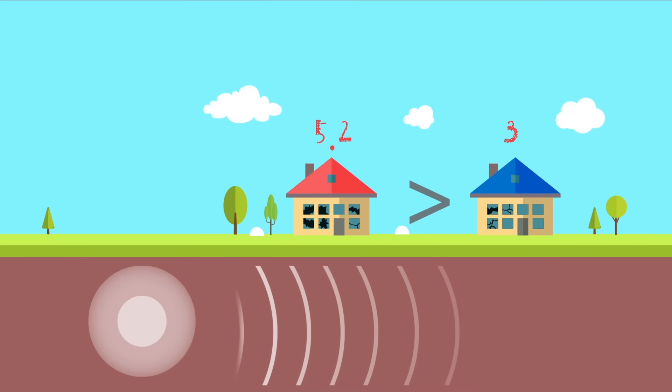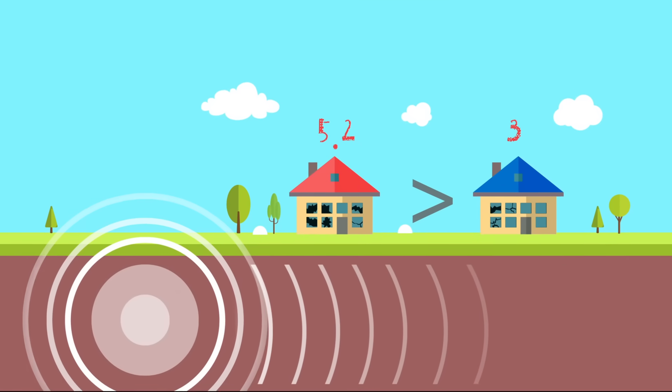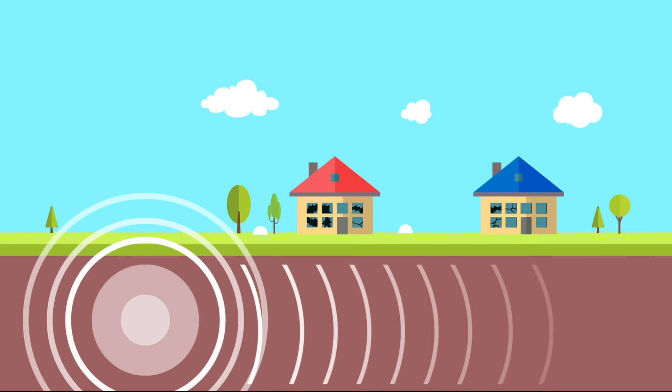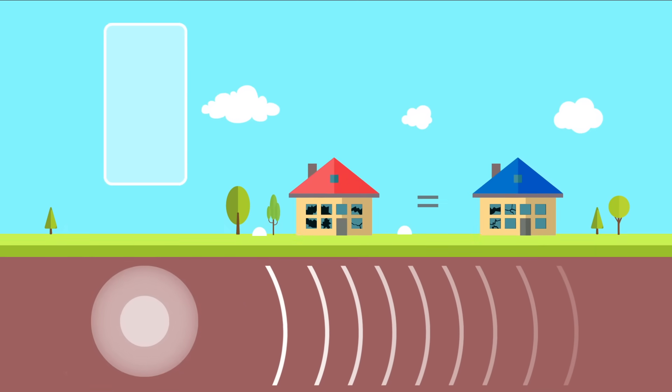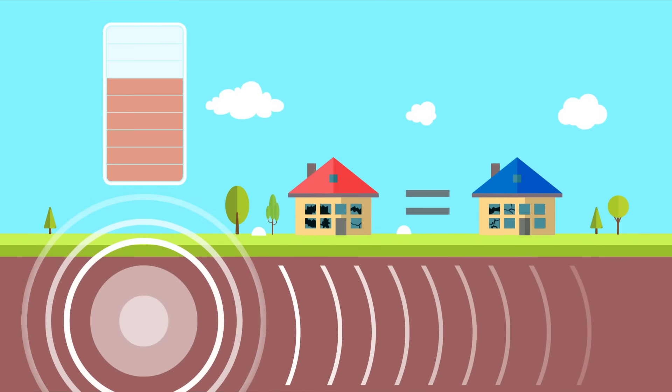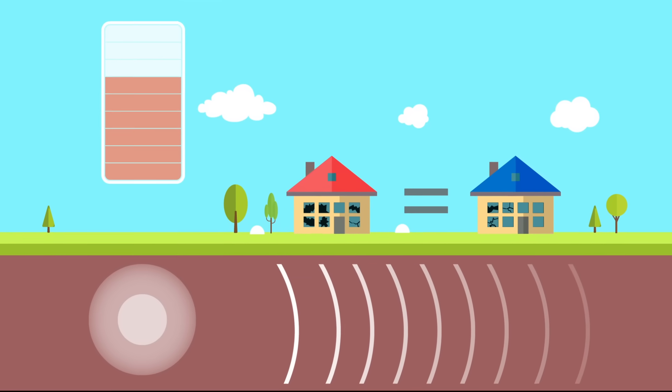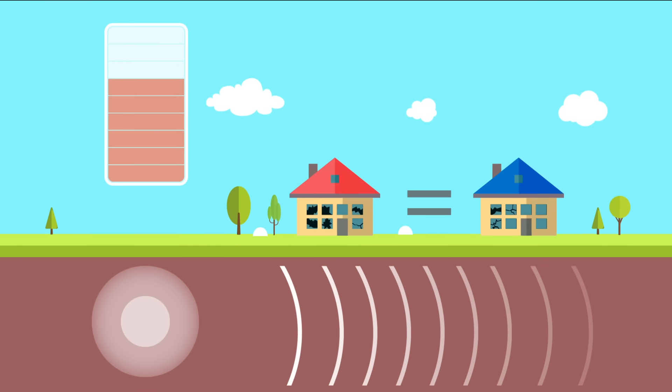Seismic intensity is a term used to describe the strength of earthquake vibrations and how much damage they cause. However, the amount of energy released by the earthquake is the same at both the blue and the red house. Magnitude is a numerical value that represents the amount of energy released at the focus of the earthquake.